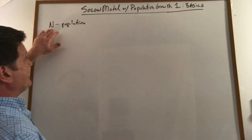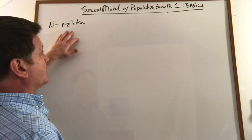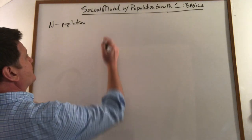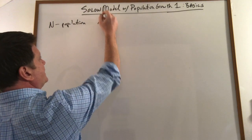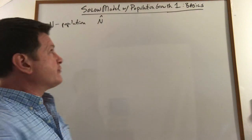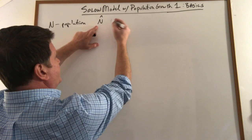So the first thing is N is our population and the growth rate of the population is N hat which is the percentage change or the growth rate of the population.